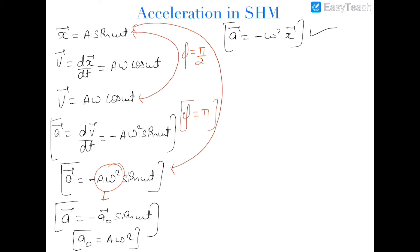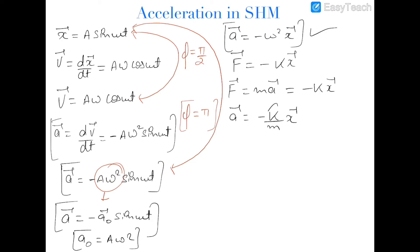This result can also be obtained from the equation F is equal to minus kx in SHM. Since F is also equal to ma, we can equate these two equations: ma is equal to minus kx, and therefore a is equal to minus k upon m into x. We already know that k upon m is omega square, so this acceleration is minus omega square x. This is the acceleration as a function of x.